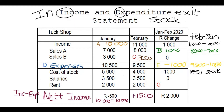Let's determine G: the change in rent between January and February. Both months had 2,000 rand, so 2,000 minus 2,000 gives you zero.